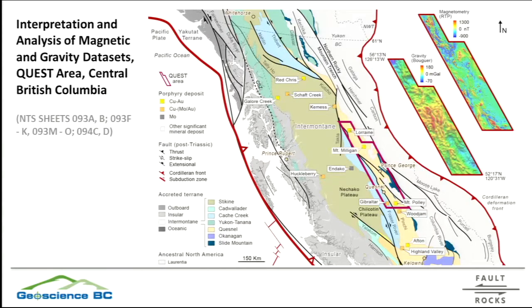We put this project together with Thomas Pisic and Peter Kowalczyk, and the main idea was to generate a new interpretation for the Quest area. The Quest area is centered at Prince George and covers rocks from the Cache Creek terrain, Quesnel terrain mainly, and to the east Slight Mountain and rocks from the western margin of ancient North America. We interpret this area plus a buffer of about 20 kilometers around it, so it was a little bit broader than the original Quest survey.